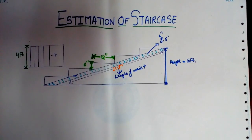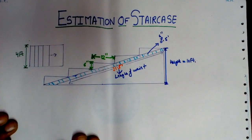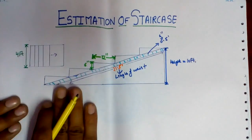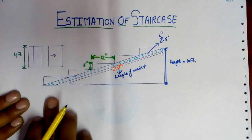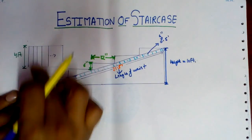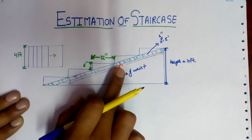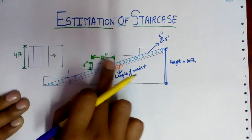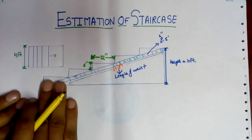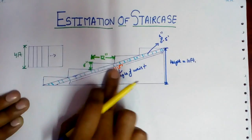Hello, good morning friends. Welcome again to the civil engineering tutorial. In today's topic, we will discuss the estimation of a staircase. I have drawn this staircase where the tread and rise are also marked, along with the width of the staircase. The length is 21.5 feet. We have to calculate the quantity required in this staircase.